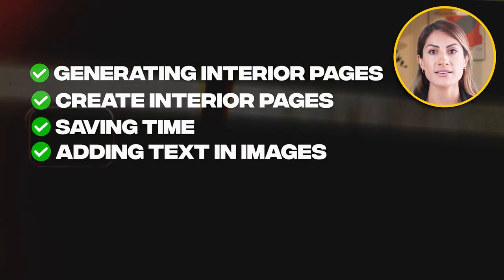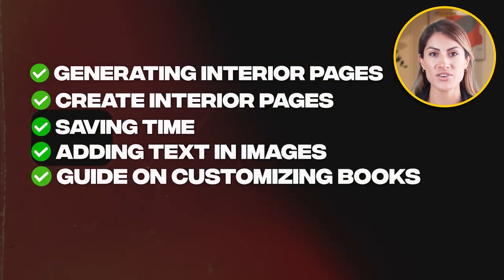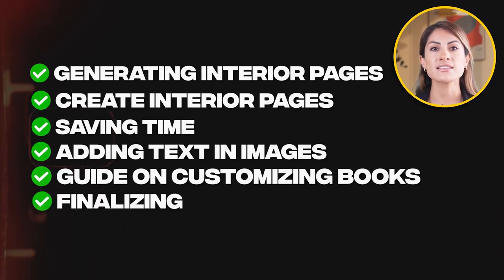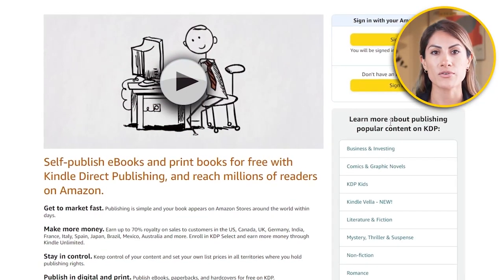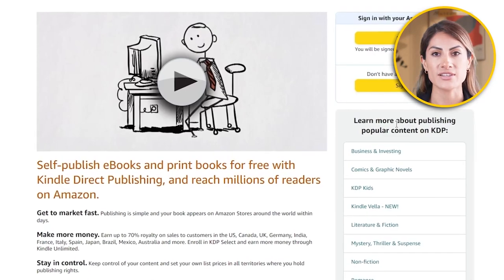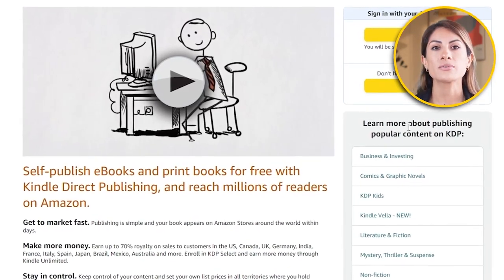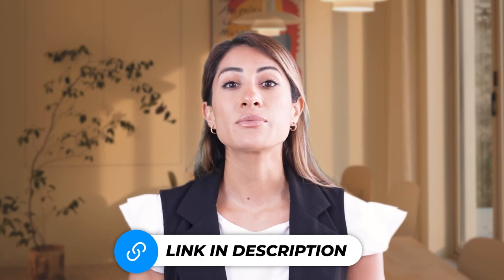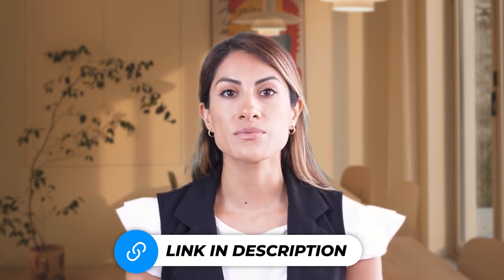Adding text and images — a step-by-step guide on customizing your book. Finalizing and downloading — get your book ready for Amazon KDP or other platforms. You can check the timestamps in the description for quick navigation.